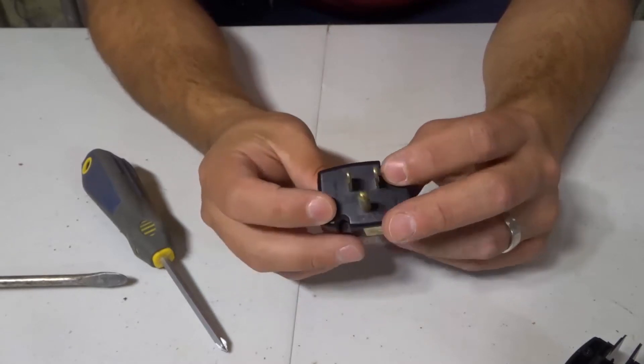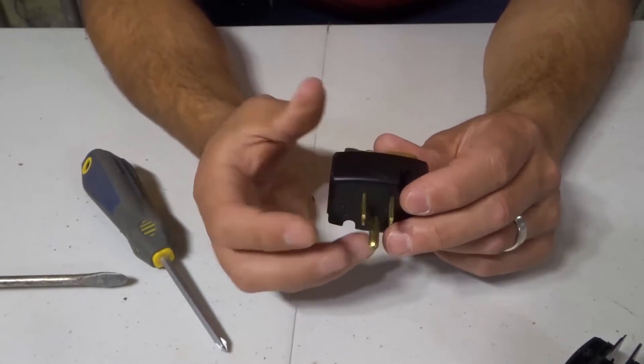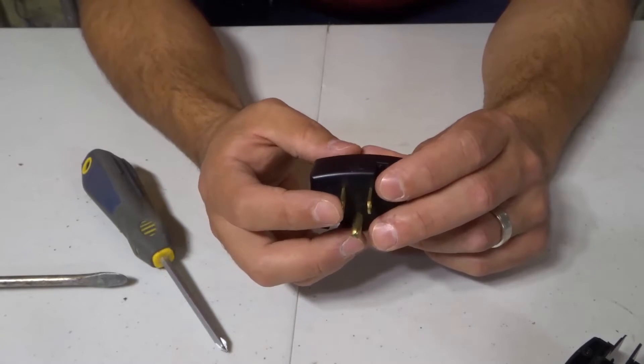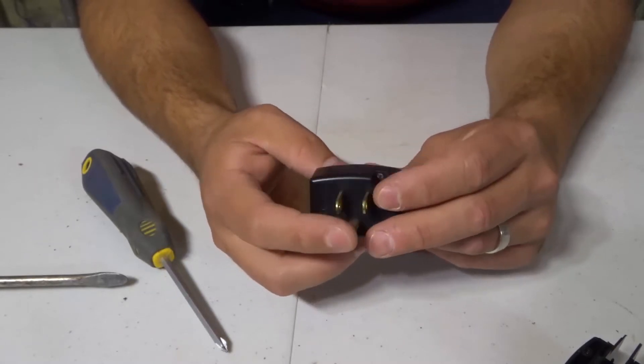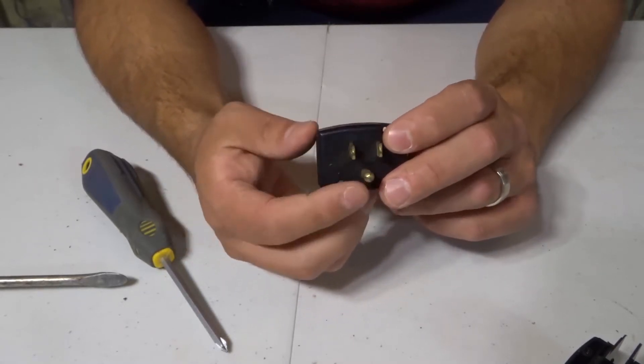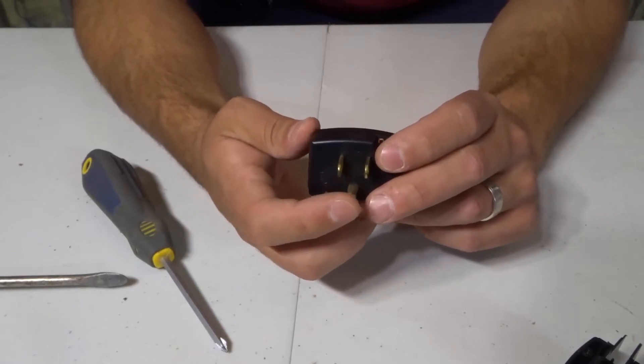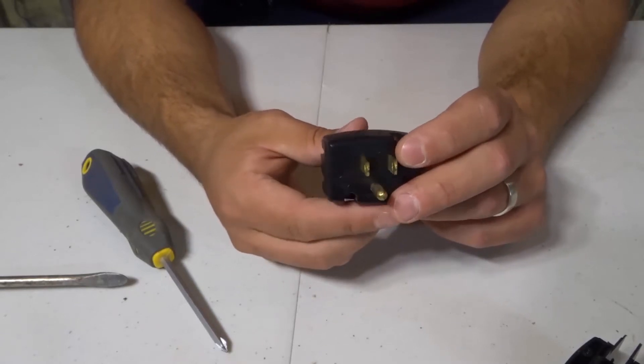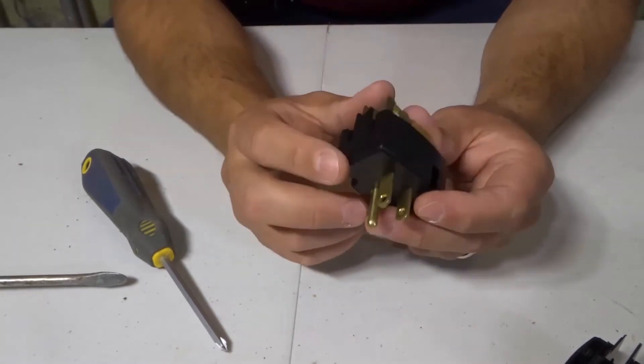The other prong is dedicated to your neutral which is your white wire where I live, which is bringing the power back. And then the circular one is going to be dedicated to your ground which is a bare copper wire that keeps everything nice and grounded, keeps your safety at top notch.